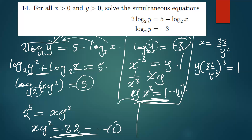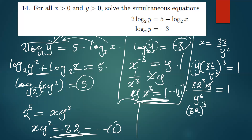We open the brackets: 32³ over y⁶. We also have the y out front, so we have 32³ over y⁶ times y, giving 32³ over y⁵ equal to 1. Cross-multiplying, we get y⁵ equal to 32³.